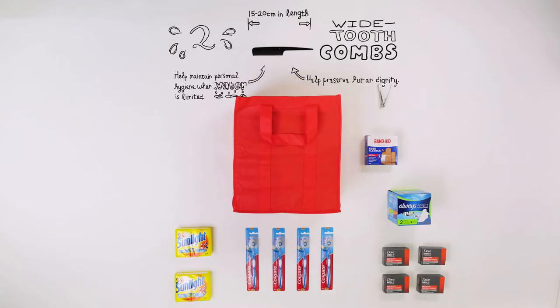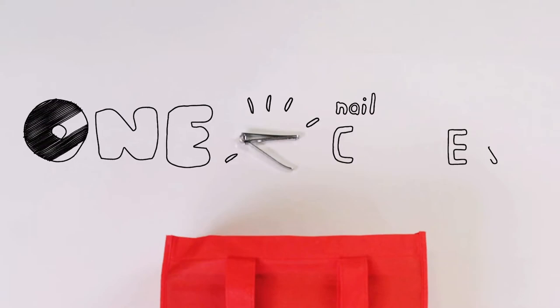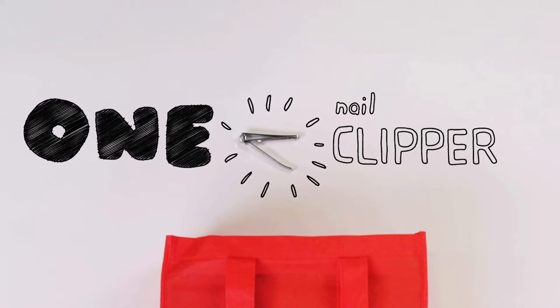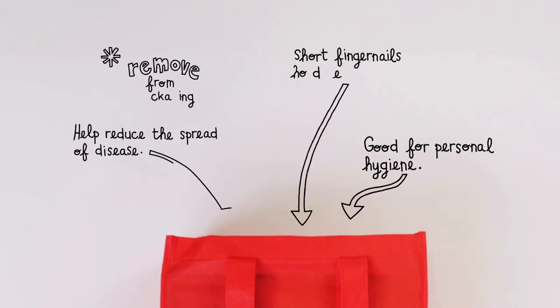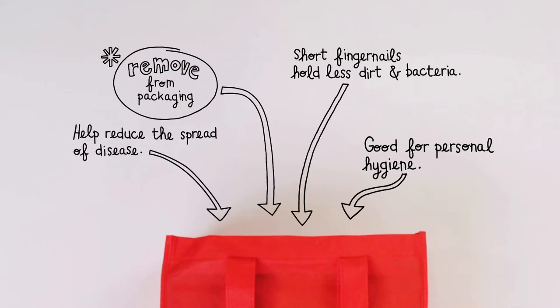The next item is especially important, fingernail clippers. In high density areas such as refugee camps where access to water is limited, nail clippers keep the spread of disease at bay where adequate sanitation is difficult.